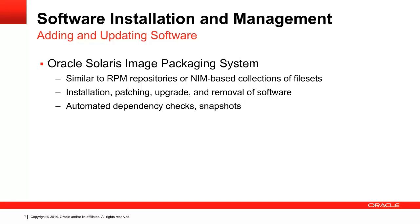A snapshot of the system is taken before each package installation, providing two advantages. First, it ensures that the system is always in a valid state and, second, it enables a rollback in the event that the package installation fails. Perhaps the biggest advantage of using Image Packaging System is that it eliminates patching, because the IPS software packaging model releases updated software packages that are already integration tested before they are made available for download and installation, removing the need for manual analysis to determine patch interdependencies. Another key advantage is that it provides safe rollback. If a system reboot is required after an update, Image Packaging System creates a ZFS file system boot environment that you can boot into. Should an update fail, you can reboot back into the older boot environment, providing for fail-safe system updates. This can make change management and system updating much easier for you.